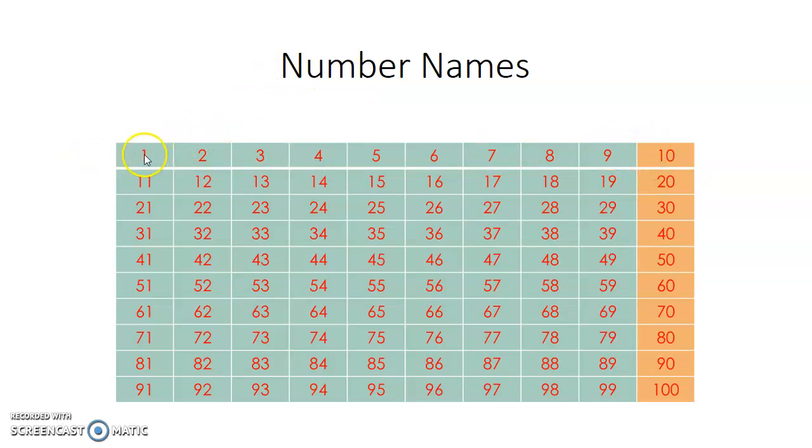Now, for 1 to 20, we already know number names. If we learn the number names of this colored row, the tens, then we can learn the number names easily. So first, we have learned number names from 1 to 20. With that, we can write the number names of all the other numbers.